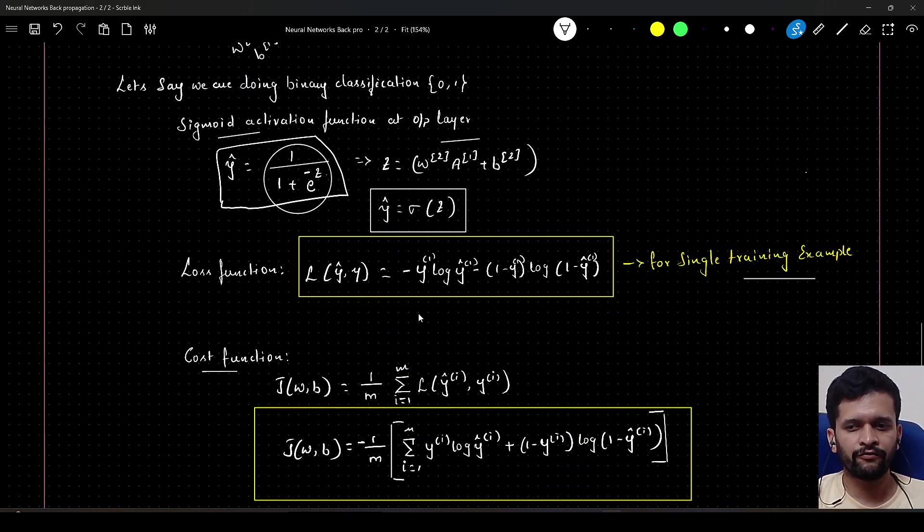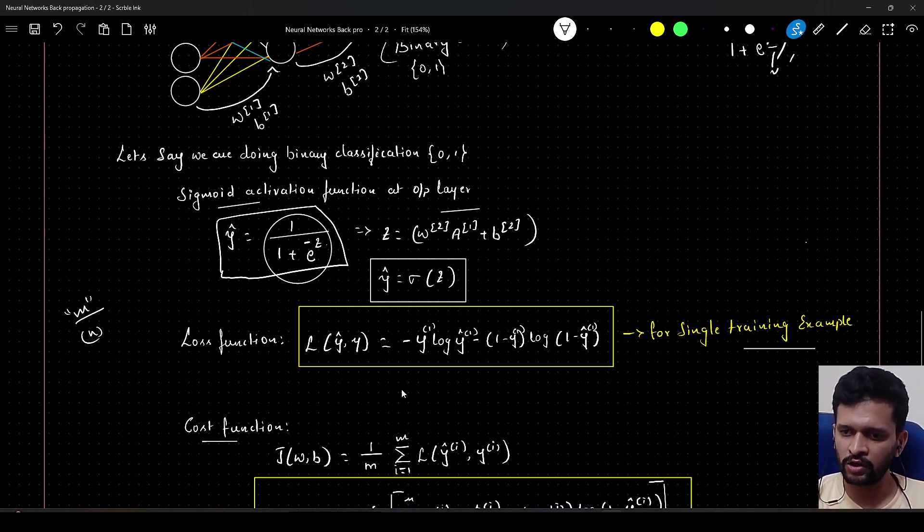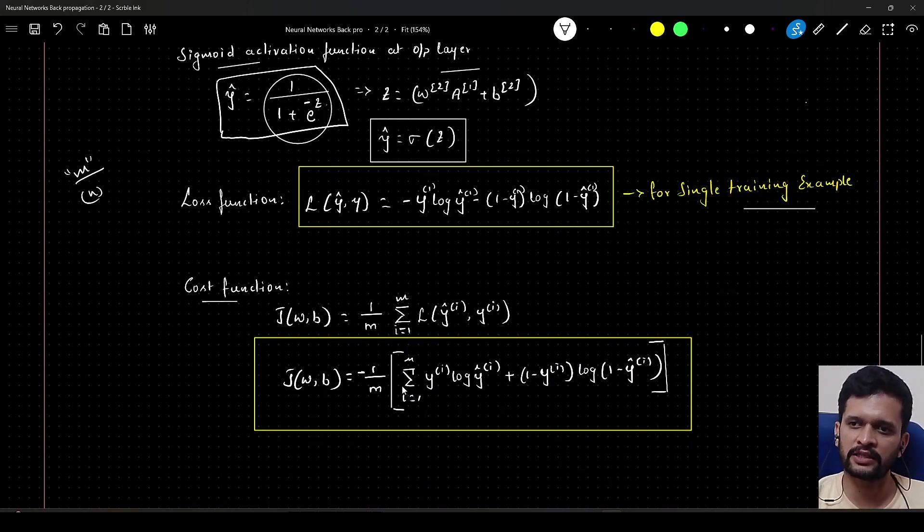Now we have to compute the loss for the entire training set that we have. We will have m training examples with n features each. In order to do that, we will iterate over all the things, sum it up, and then take the average of it. It is 1 by m, summation i equal to 1 to m, then loss of y hat i comma y i. If we expand this, this is nothing but this particular thing for each training example. This is how the final loss or the cost function looks like for logistic regression.